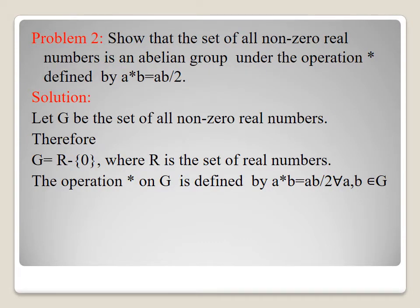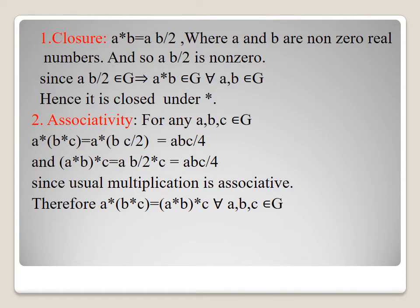Problem 2: show that the set of all non-zero real numbers is an abelian group under the operation star defined by a star b equals ab/2. Solution: let G be the set of all non-zero real numbers, so G = ℝ \ {0}. The operation star on G is defined by a star b equals ab/2 for all a, b in G. Closure: a star b equals ab/2 where a and b are non-zero real numbers, so ab/2 is non-zero, hence ab/2 belongs to G, so a star b belongs to G for all a, b in G — it is closed.